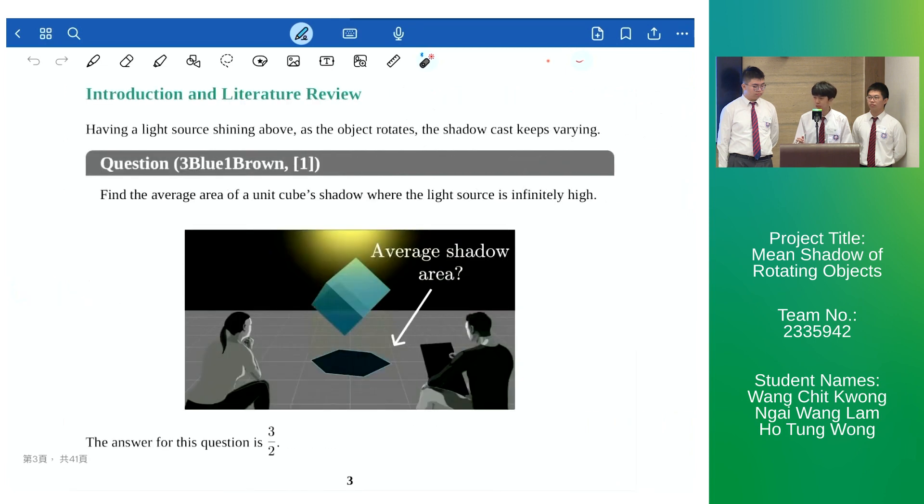Our project was first inspired by this interesting question on YouTube which concerns the average shadow area of a rotating unit cube cast by an infinitely high light source. An infinitely high light source implies that the light rays are vertical and parallel. That is, the shadow is orthogonally projected and as the object rotates the shadow cast keeps varying.